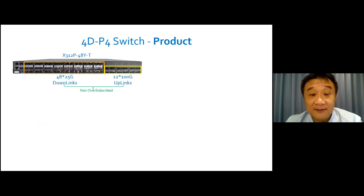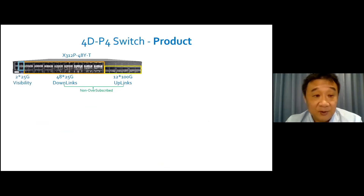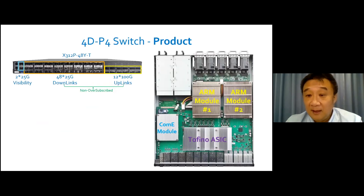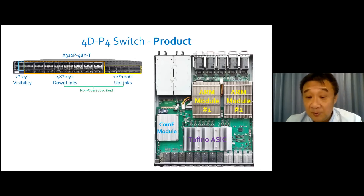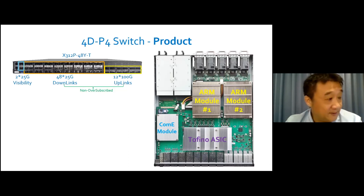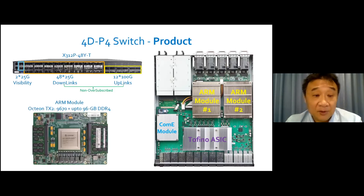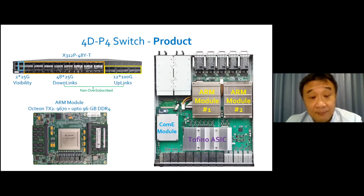The switch product contains non-oversubscribed downlink and uplink ports. In addition, it also provides two 25-gig visibility ports on the front panel. This picture shows the key components inside the switch product, which include a Tofino ASIC, a ComExpress module, and two pluggable ARM modules. Each ARM module contains an Octeon TX2 chip and up to 96 gigabytes of DDR4 memory.